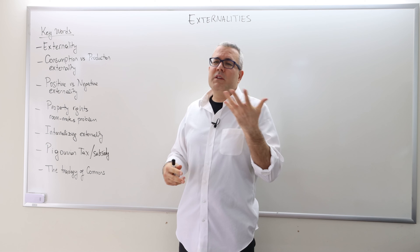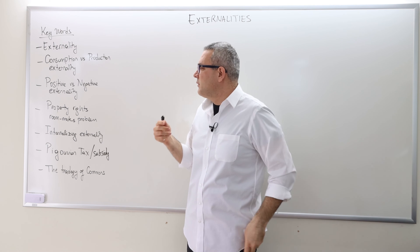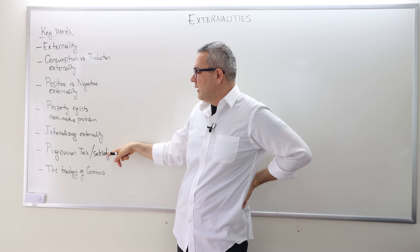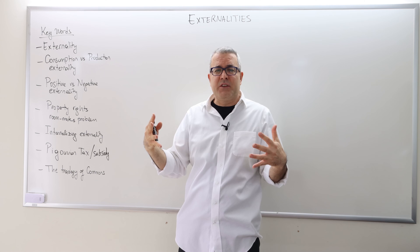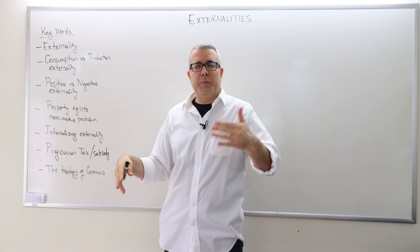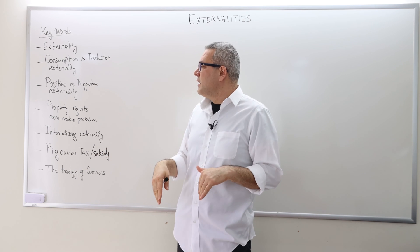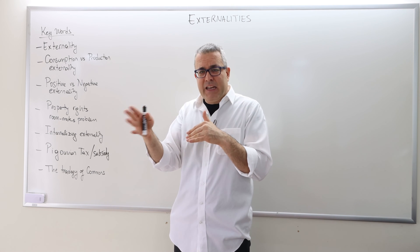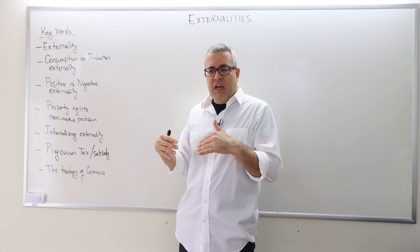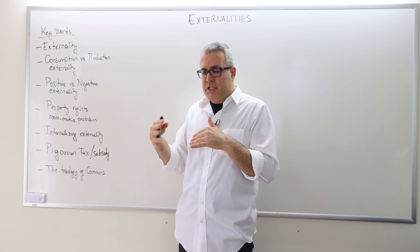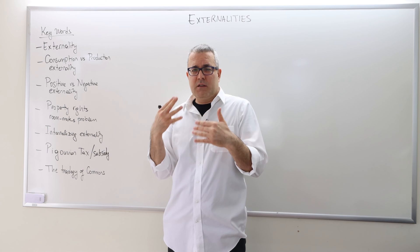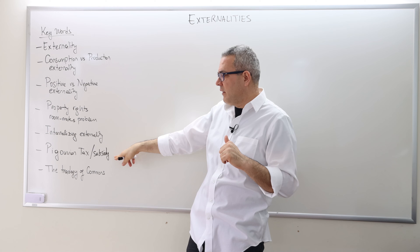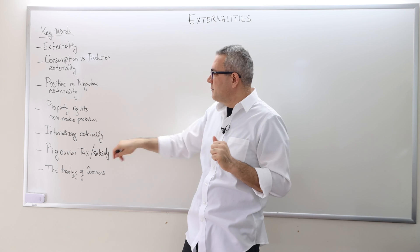The distinction between positive and negative is relevant because if we're talking about positive externality, we will talk about Pigouvian subsidy; if we talk about negative externality, we usually talk about Pigouvian tax. So we tax the agent that impacts others negatively and subsidize the agents who impact others positively. That's how positive versus negative externality maps onto Pigouvian tax versus subsidy.